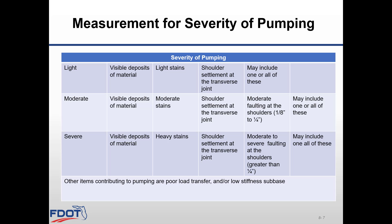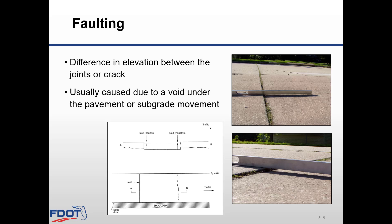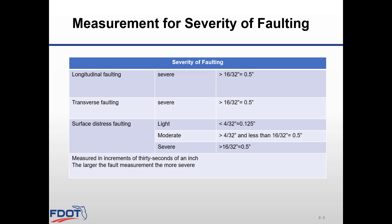In new pavement, the elevations of each slab at the transfer and longitudinal joints are the same. For pavement that has faulting, there is an elevation difference between the slabs at the joints. Faulting can be caused by erosion of the leave slab and buildup on the approach slab of base fines by the action of pumping. A lack of load transfer also contributes to faulting. The severity of faulting is measured in increments of thirty-seconds of an inch — the larger the fault measurement, the more severe. Faulting data is collected using a laser profiler during collection of the ride rating data.